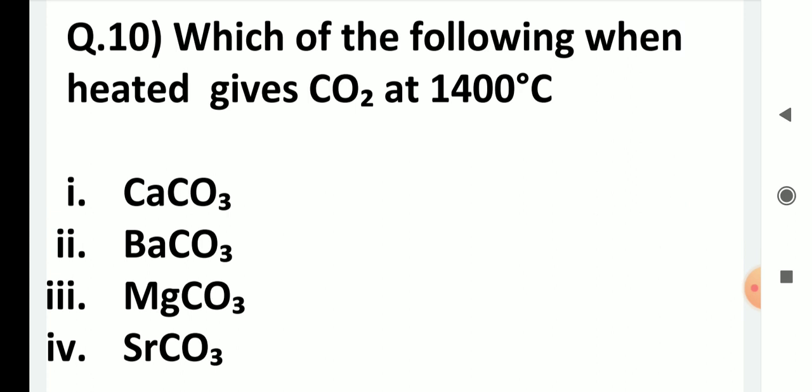Which of the following, when heated to 1400 degrees, gives carbon dioxide? Choices: calcium carbonate, barium carbonate, magnesium carbonate, strontium carbonate. Calcium, magnesium, and strontium carbonate react at lower temperatures, whereas barium carbonate must be heated to 1300–1400 degrees to release carbon dioxide. So the answer is barium carbonate.